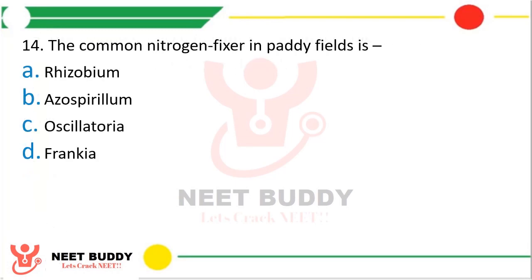Question 14: The common nitrogen fixer in paddy field is? Rhizobium, Azospirillum, Oscillatoria, or Frankia. The correct answer is Option C — Oscillatoria.